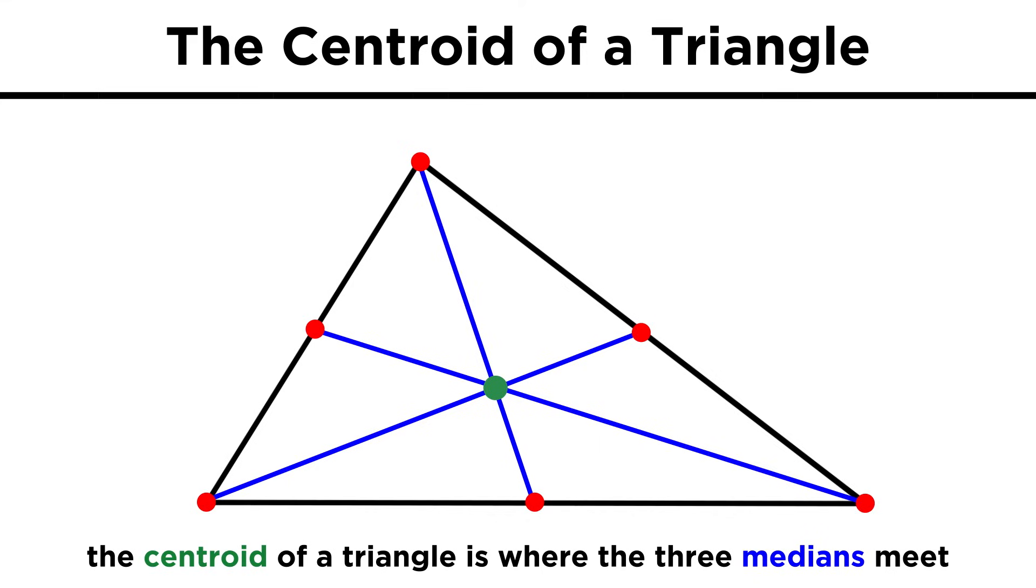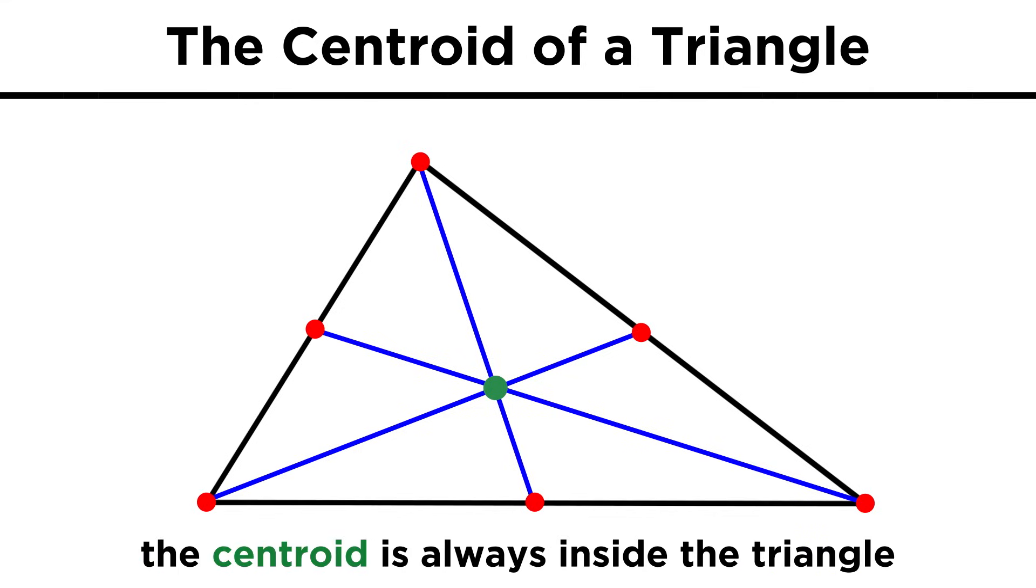If we find the point where all three medians meet, this is called the centroid of the triangle, and like the in-center, this is always inside the triangle.